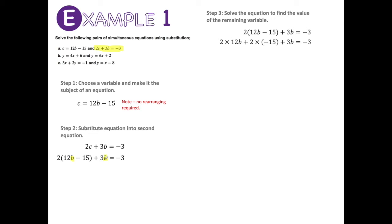Expanding: 2 times 12b plus 2 times negative 15 plus 3b equals negative 3. Simplifying: 24b minus 30 plus 3b equals negative 3. Collecting like terms: 27b minus 30 equals negative 3. Applying reverse order of operations — adding 30 to both sides: 27b equals 27. Therefore b equals 27 divided by 27, so b equals 1.